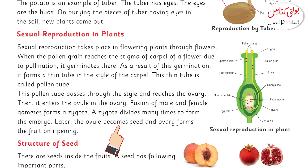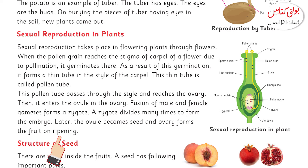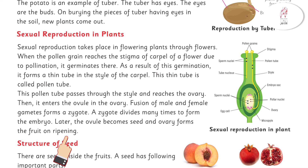Later, the ovule becomes the seed and the ovary forms the fruit on ripening. The ovule will become the seed and the ovary will become the fruit, and we can extract the fruit from there.